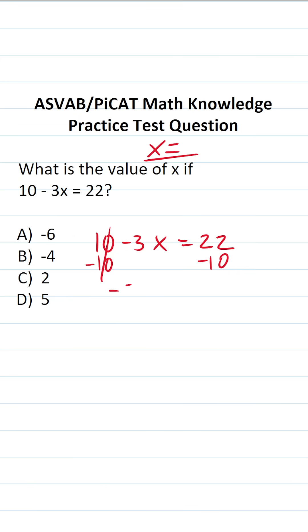In doing so, this crosses out, leaving me with negative 3x over here. 22 minus 10, you should be able to do mentally. It's going to be 12.